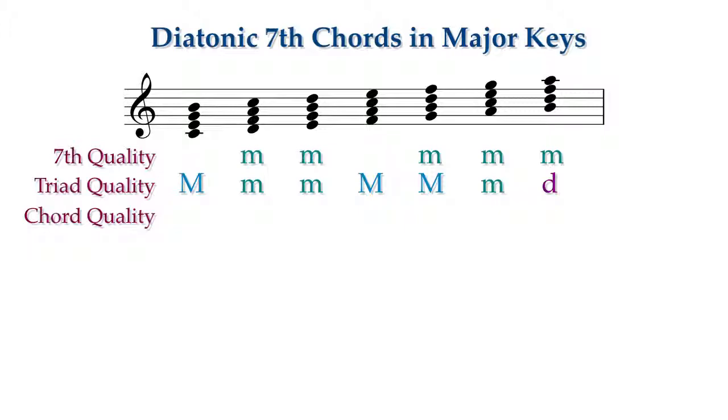All of the sevenths are a minor seventh above the root except for the tonic and subdominant chords, where the seventh is a major seventh above the root.